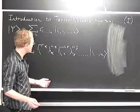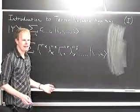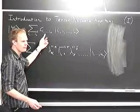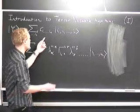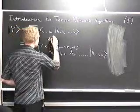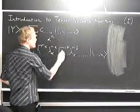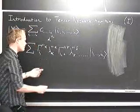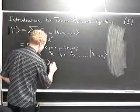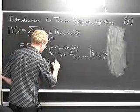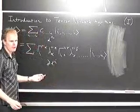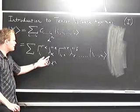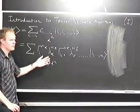So far, this might seem like a fairly pointless exercise. We've gone from a description of a state in terms of d-to-the-n parameters — where d is the local dimension — to a description that has at least that many parameters, possibly more. That's because at this stage I haven't yet introduced any approximation.